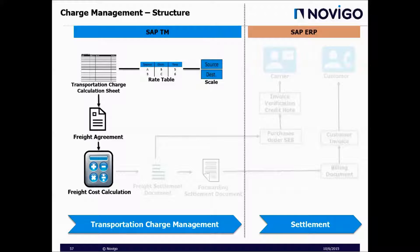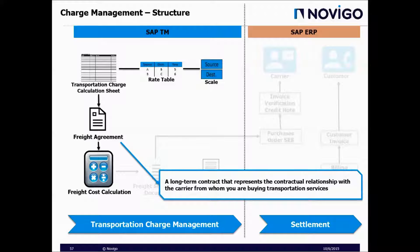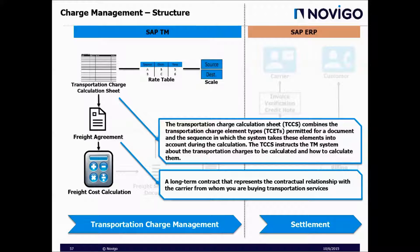When doing freight cost calculation, the system takes some objects into account. The first one is the freight agreement — a long-term contract that represents the contractual relationship with the carrier from whom you're buying transportation services. The freight agreement includes a transportation charge calculation sheet. The transportation charge calculation sheet, or TCCS, combines the transportation charge element types permitted for a document and the sequence in which the system takes these elements into account during calculation.